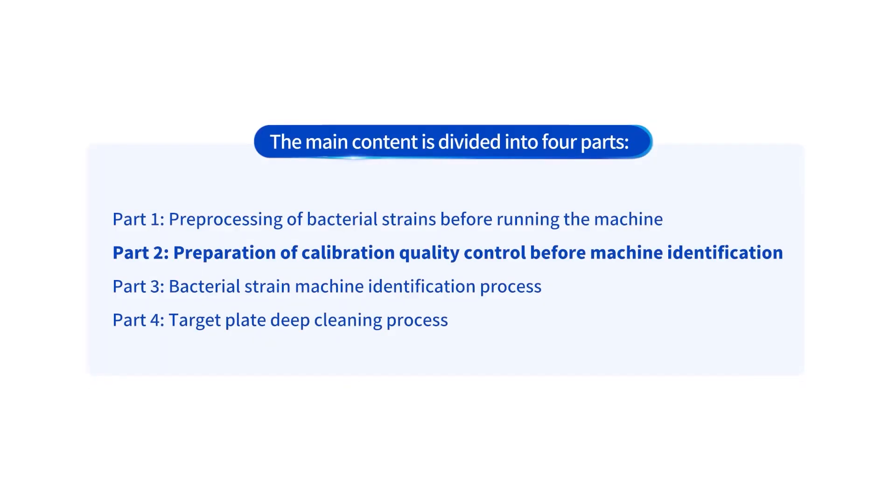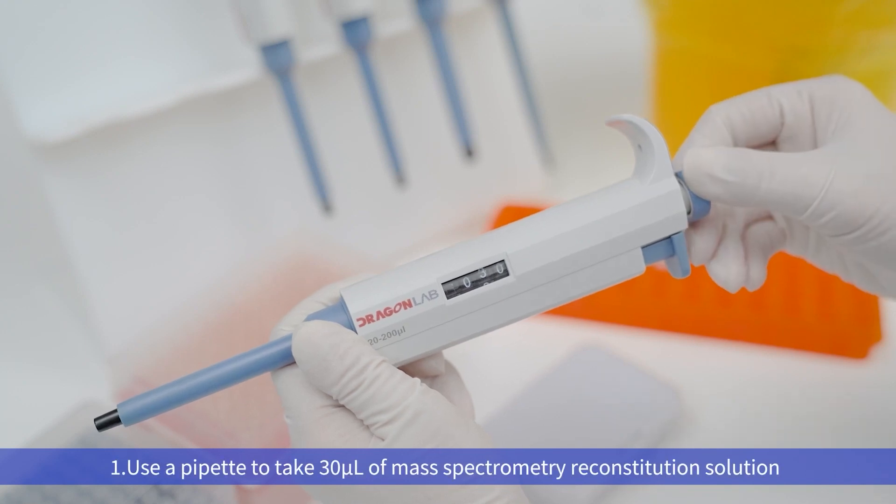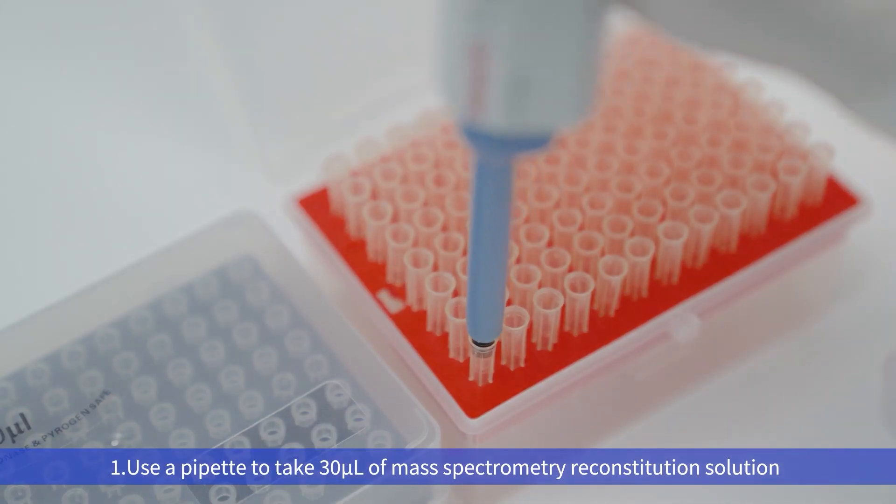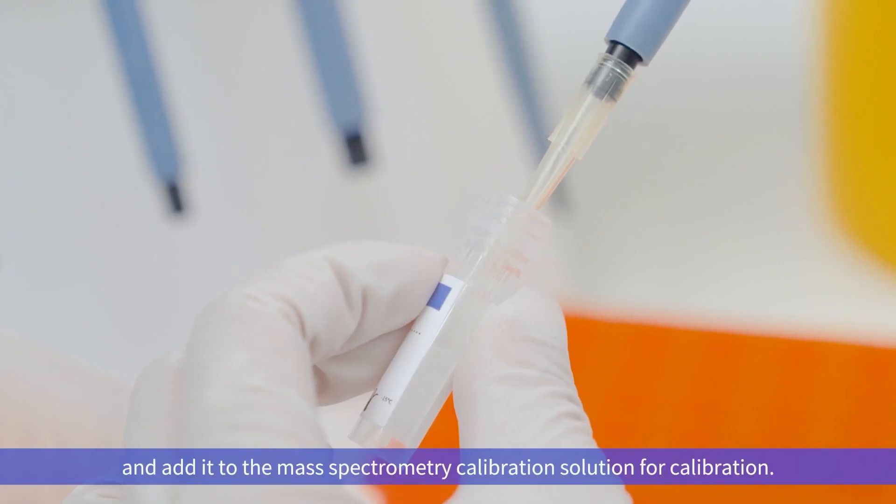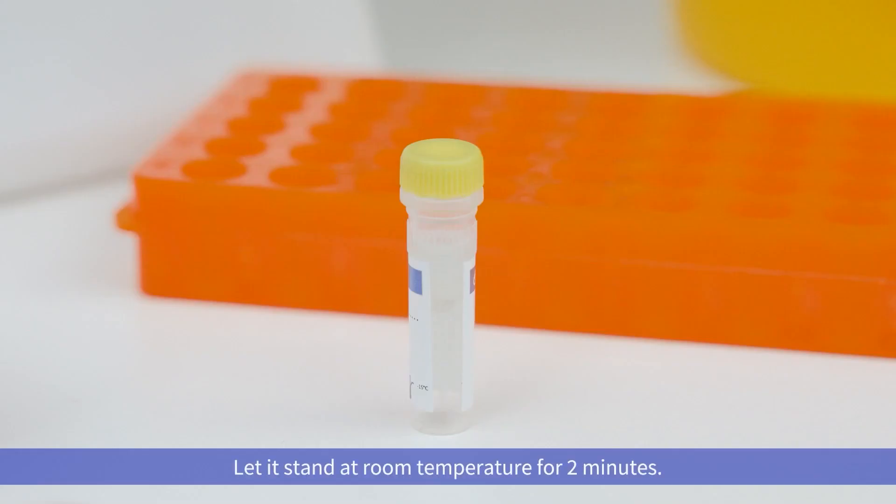Part 2: Preparation of calibration quality control before machine identification. First, use your pipette to take 30 microliters of mass spectrometry reconstitution solution and add it to the mass spectrometry calibration solution for calibration. Let it stand at room temperature for 2 minutes.